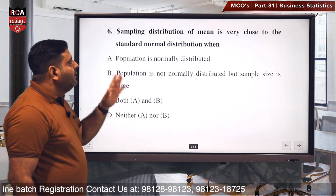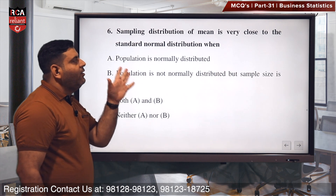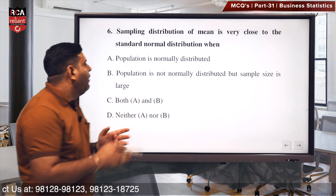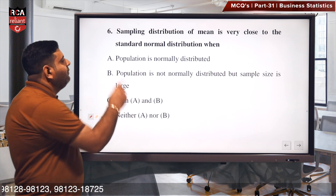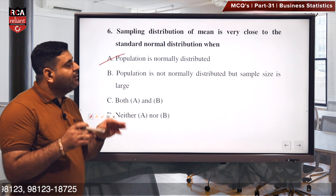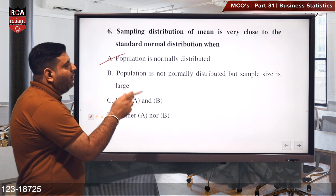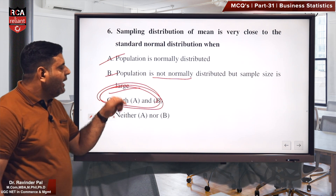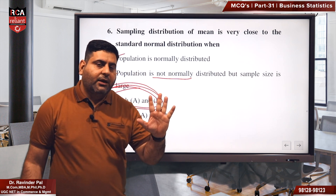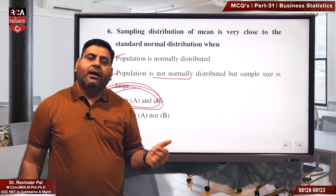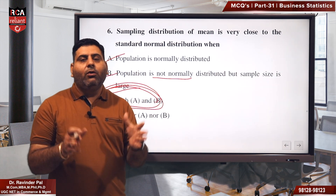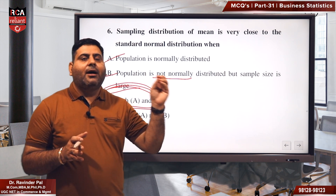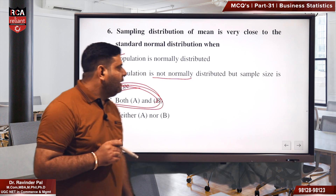Sixth question: the sampling distribution of mean is very close to the standard normal distribution — when can this happen? First, when the population is normally distributed — that is absolutely correct. Second, when the population is not normal but the sample size is large. So the right answer is C — both A and B. Either the population is normally distributed, or the sample size is large. In both these cases, the sample will purely represent the entire characteristics of the normal population.